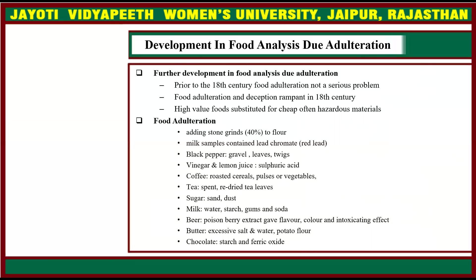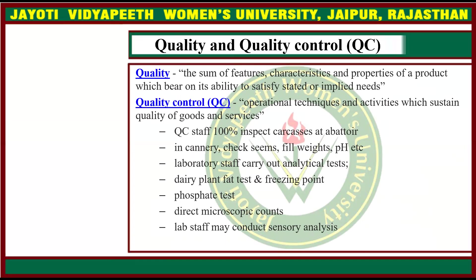Then quality and quality control. Quality is the sum of features, characteristics and properties of a product which bear on its ability to satisfy stated or implied needs. Quality control refers to operational techniques and activities which sustain the quality of goods and services. Staff inspect carcasses 100% at abattoirs (slaughterhouses). In canneries, checks include seams, fill weights, and pH. Laboratory staff carry out analytical tests such as dairy plant fat testing, freezing point and phosphate tests, direct microscopic counts, and sensory analysis.